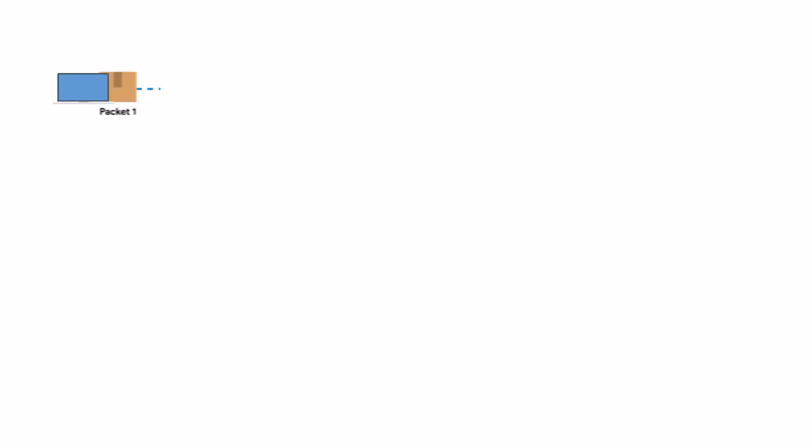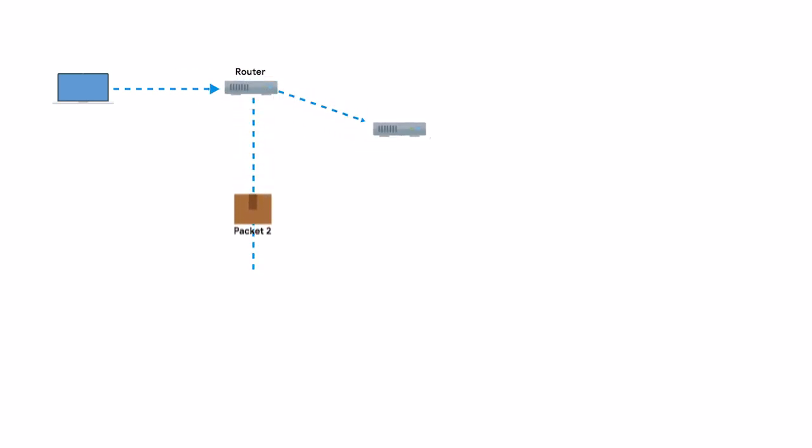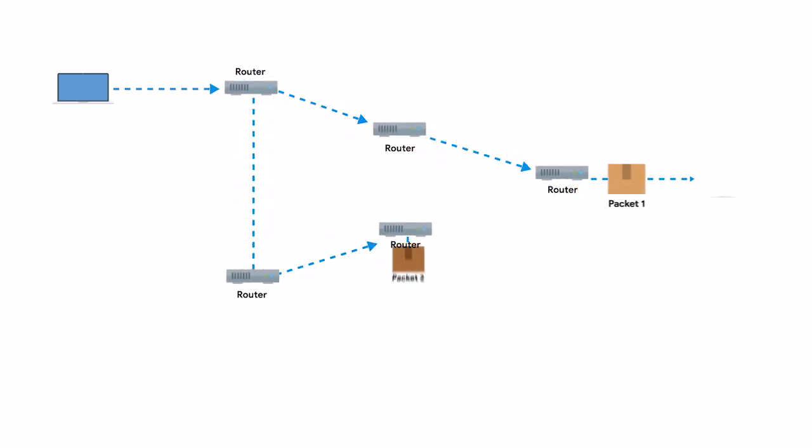With ping, you now have a way to determine if you can reach a certain computer from another one, and you can understand the general quality of the connection. But communications across networks — especially across the internet — usually cross lots of intermediary nodes. Sometimes you need a way to determine where in the long chain of router hops the problems actually are. Traceroute to the rescue.